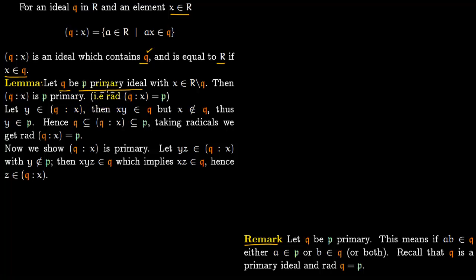We will also need to show that the radical of Q/x is P. Let us start proving it. The first thing we are going to show is that the radical of Q/x equals P. Let Y lie in Q/x, which essentially means that XY lies within Q — just copying the definition. But X is not in Q, since we picked X outside Q but within ring R.